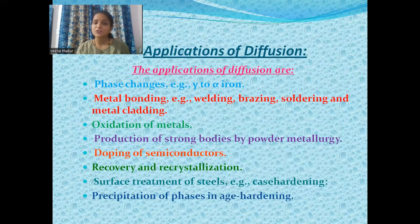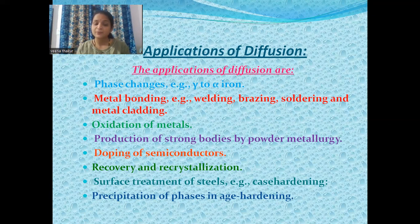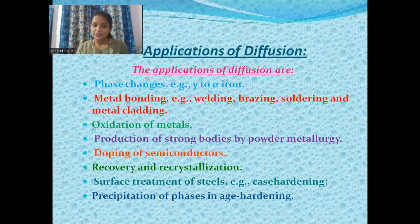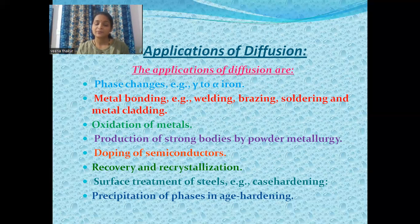Now let's see the applications of diffusion. First, it is useful for phase changes, for example gamma to alpha iron. Second, it is useful for metal bonding like welding, brazing, soldering, and metal cladding. Third, it is useful for oxidation of metals. Fourth, it is useful for production of strong bodies by powder metallurgy. Other applications include doping of semiconductors, recovery and recrystallization, surface treatment of steels and case hardening, and precipitation of phases in age hardening.